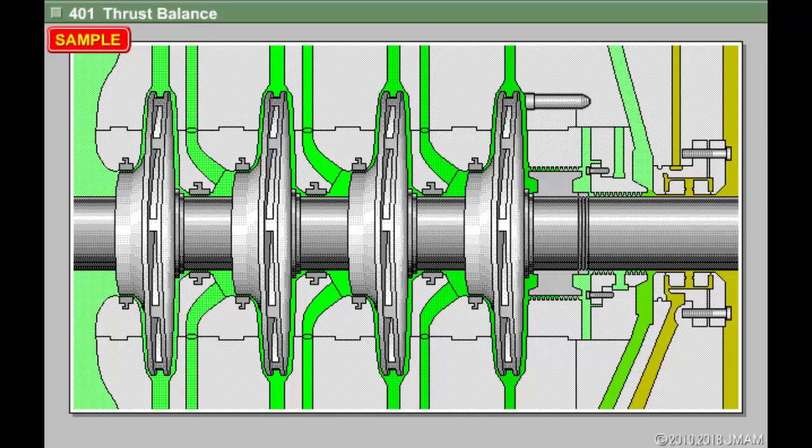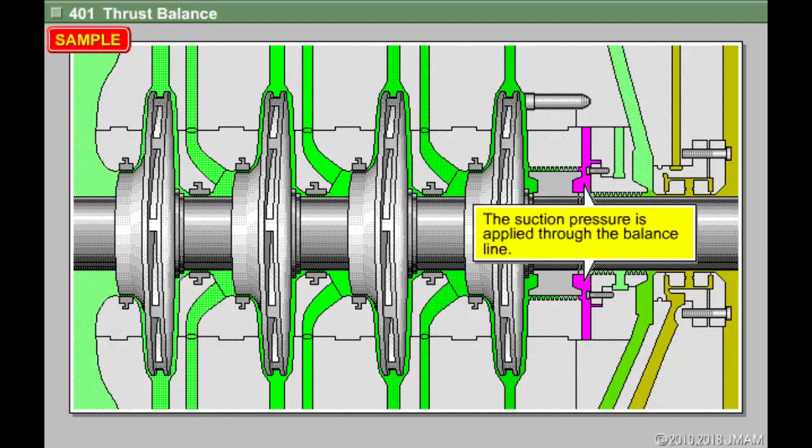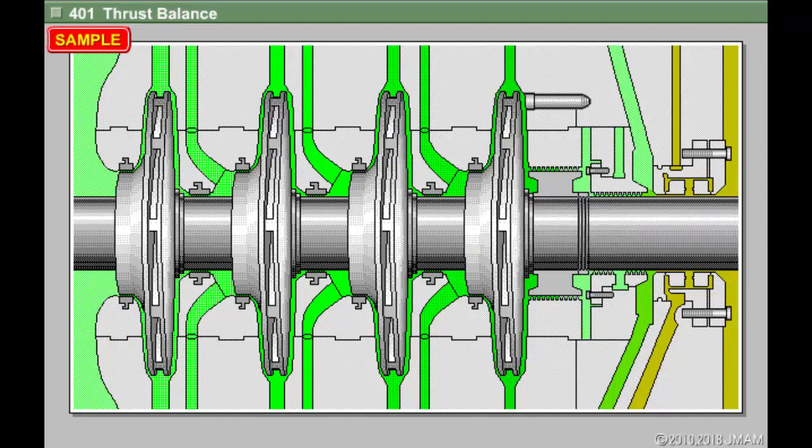Then, the suction pressure is applied to this side of the balance drum through the balance line. When that happens, the thrust power acts on this side of the balance drum according to the difference between the final-stage discharge pressure and suction pressure.